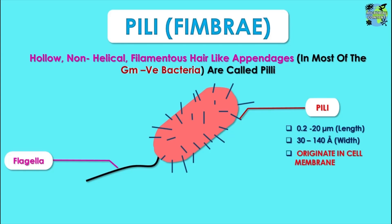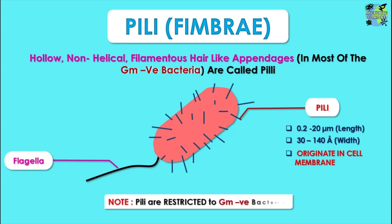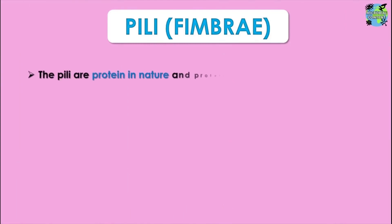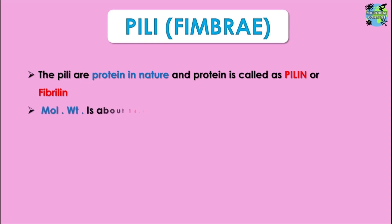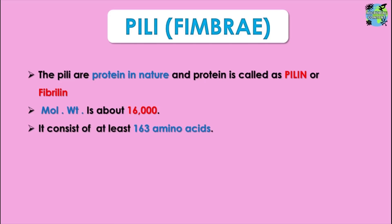These organelles originate in the cell membrane and are mainly found restricted to gram-negative bacteria. As far as the pili structure is concerned, they are protein in nature, and the protein of the pili is called pilin, or as fimbriae it is referred to as fimbrilin. The molecular weight of this protein is about 16,000 and it consists of at least 163 amino acids.